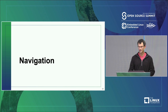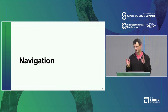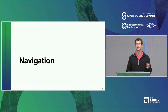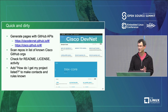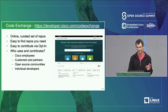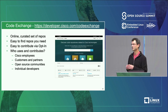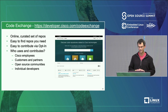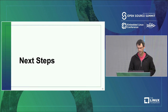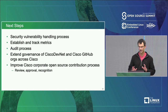I'm going to skip the navigation section in the interest of time. Basically, with all these GitHub repos, we wanted to make it easy for people to find code regardless of which GitHub org it was in. We had a quick-and-dirty approach using automated tools and APIs, and then switched to an opt-in method called Code Exchange — I've given entire talks on that — but I want to make sure I have time for next steps.